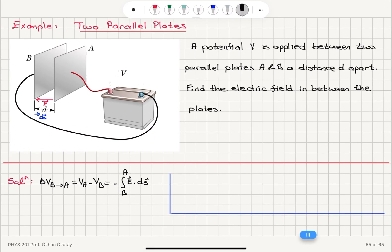So the dot product will give us a minus sign. So this will become minus the integral from B to A, E dot dS minus 1. And the electric field in between the plates is a uniform electric field, E.